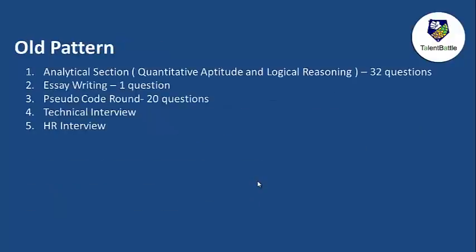Let us put some light on the old pattern. In the old pattern there were four to five rounds. The first round was the analytical section, which was based on quantitative aptitude and logical reasoning, with 32 questions. There was one essay writing question. After that there was a pseudo code round with 20 questions, and then there was a technical and HR interview.